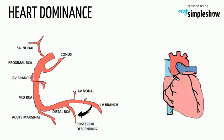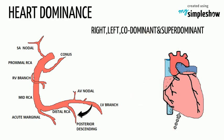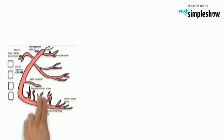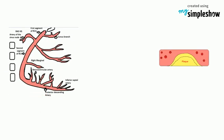Heart dominance is characterized as left, right, or codominant based on which vessel supplies the inferior wall. The vessel most commonly originates from the right coronary artery — called right dominant — or from the left circumflex artery — called left dominant — or from both, which is known as codominant. There have been physiologic variants described in case reports, such as an origin from the left anterior descending artery, referred to as super dominant.